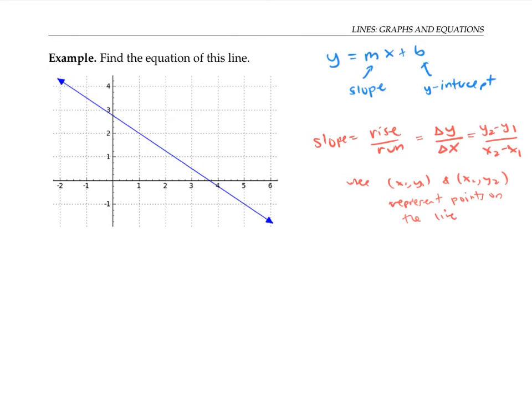While we could use any two points on the line to find the slope, it's convenient to use points where the x and y coordinates are integers, that is points where the line passes through grid points. So here would be one convenient point to use, and here's another convenient point to use. The coordinates of the first point are one, two, and the next point is five, negative one.